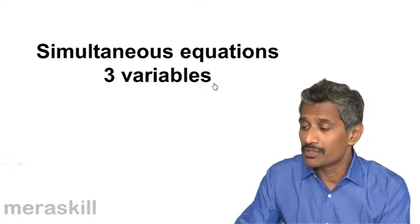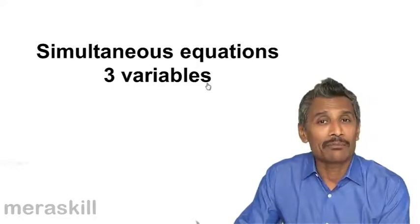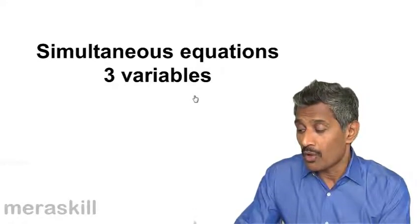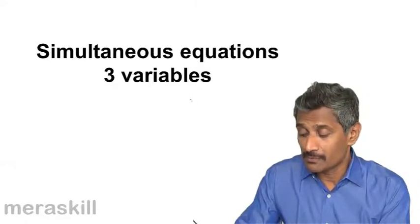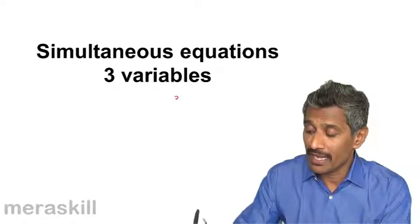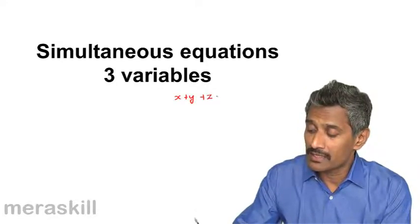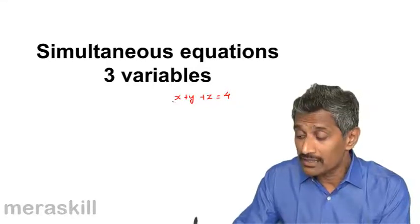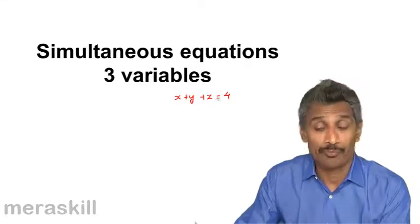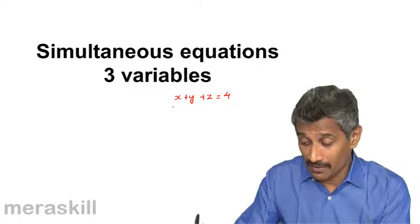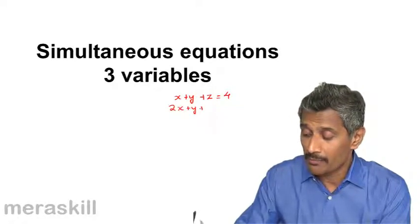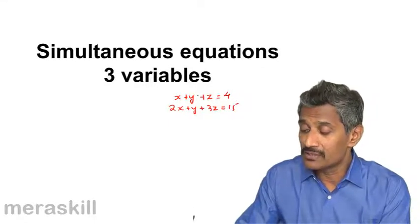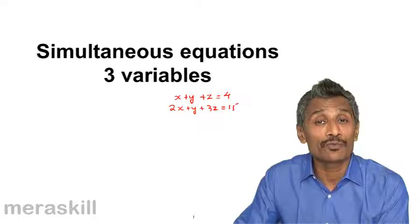From here, we need to solve two simultaneous equations in three variables. When you have three variables, suppose you have an equation: x plus y plus z is equal to 4 — that is an equation in three variables. Now, this has an indefinite solution. If I have one more condition, 2x plus y plus 3z is 15, even then this would not be sufficient to find the value of all three variables.